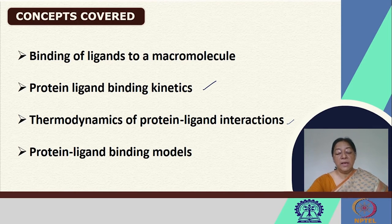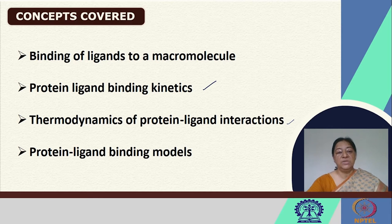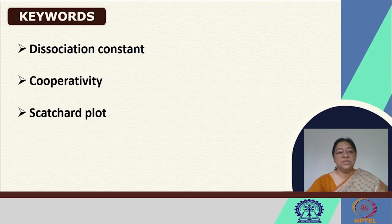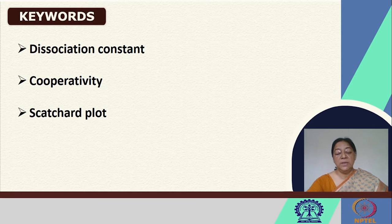We had looked at some of these in the previous lecture, where we saw the specifics of binding, how this occurs, and specific examples of the specificity and affinity. In this lecture, we will be looking at concepts like the dissociation constant and the Scatchard plot, which is a common plot in protein-ligand binding.